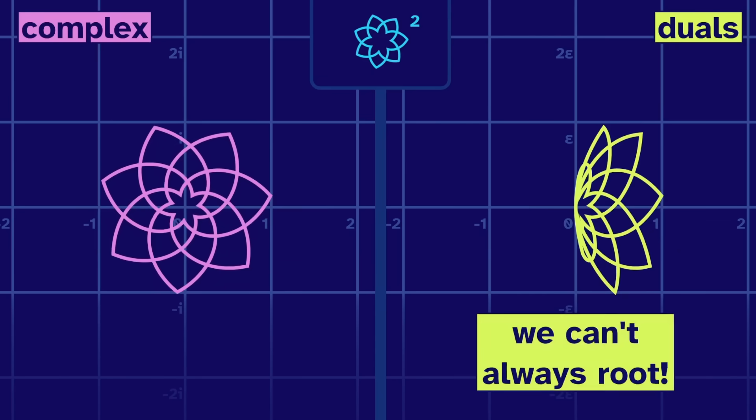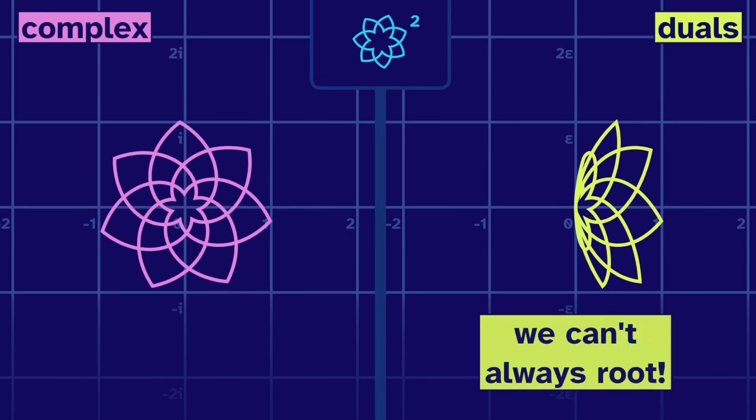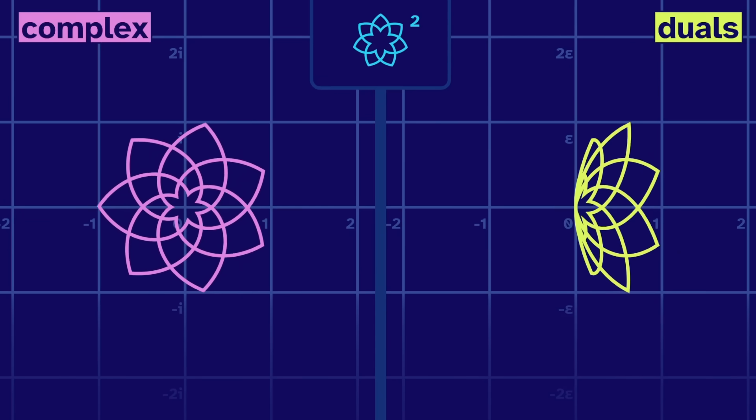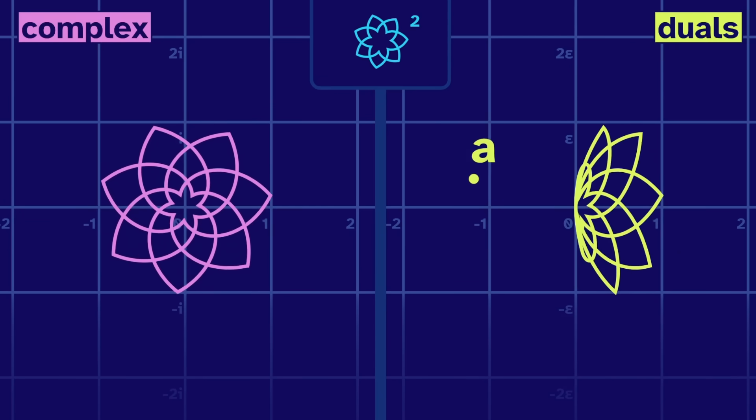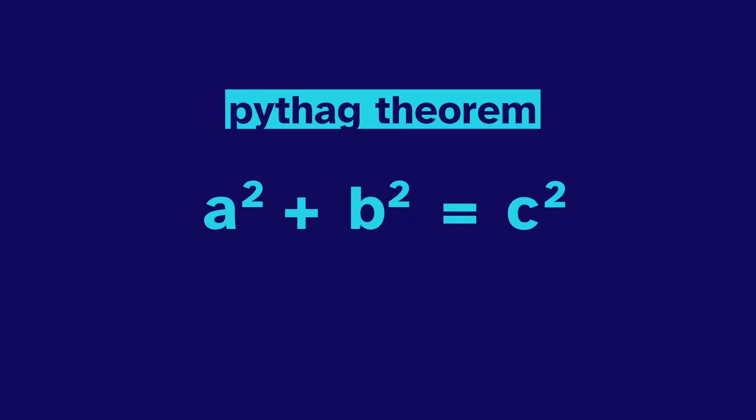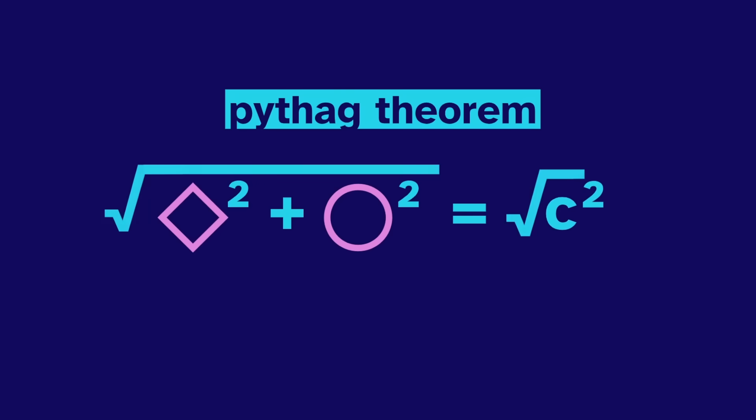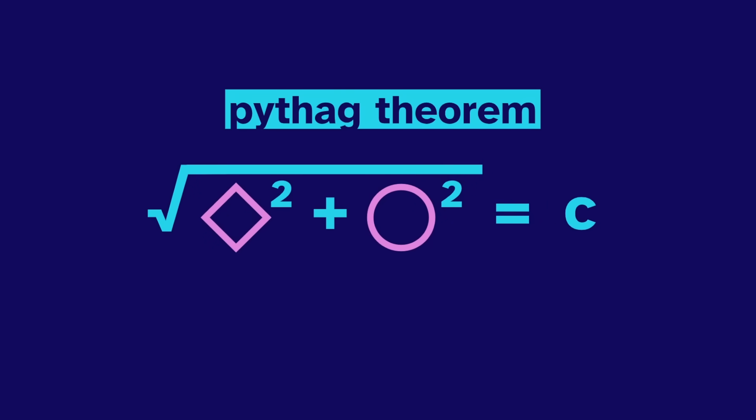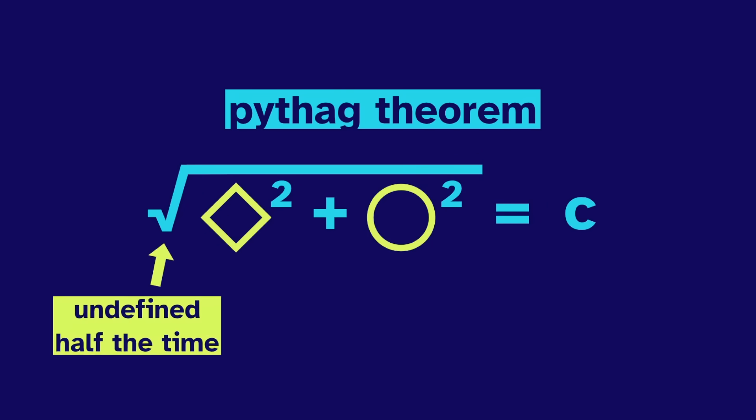We can't always root. As we saw earlier, squares are always in the east, which means that any number in the west can't be rooted. And this seems worrying for the Pythagorean theorem. In a previous video, using complex numbers, we took a and b as shapes and solved for c. And that requires a square root. In the duals, they're undefined half the time.